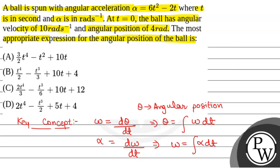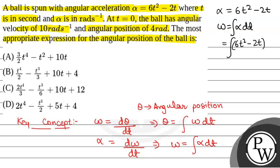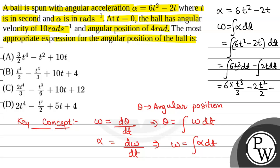We have been given alpha equal to 6t squared minus 2t. So omega will be equal to the integration of alpha dt, that is the integration of (6t squared minus 2t) dt. This gives us the integration of 6t squared dt minus the integration of 2t dt. Now, t squared integrates to t cubed by 3, so this will be 6 times t cubed by 3, minus 2 times t squared by 2, plus a constant C.